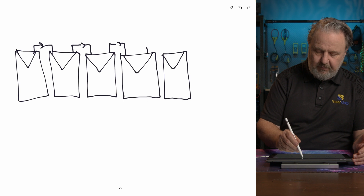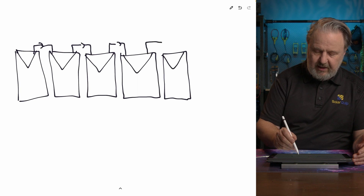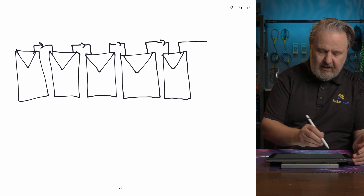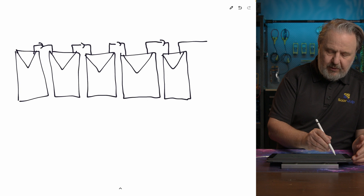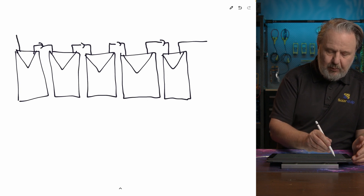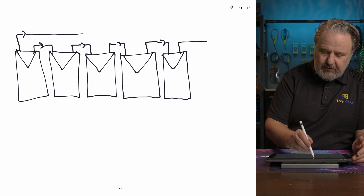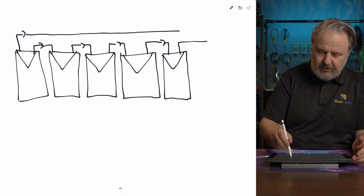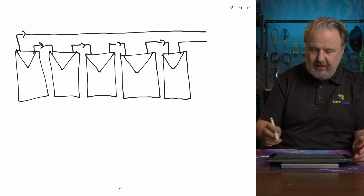In systems as they get bigger you often have more than one string. You also have what's called a home run cable — that cable goes from the last module in the string all the way back to a disconnection point.